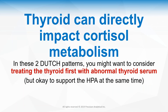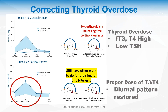So thyroid can directly impact cortisol metabolism. For Dutch patterns three and four, consider treating the thyroid first — run a full thyroid panel including TSH, T4, T3, antibodies, and possibly reverse T3. It's also okay to generally support the HPA axis simultaneously — give vitamin C, B5, and adaptogens — and then once thyroid is better balanced, you can be much more specific and targeted in your treatment.